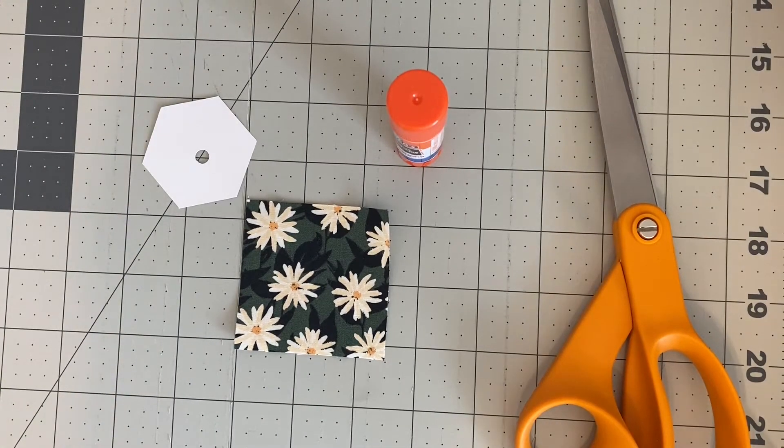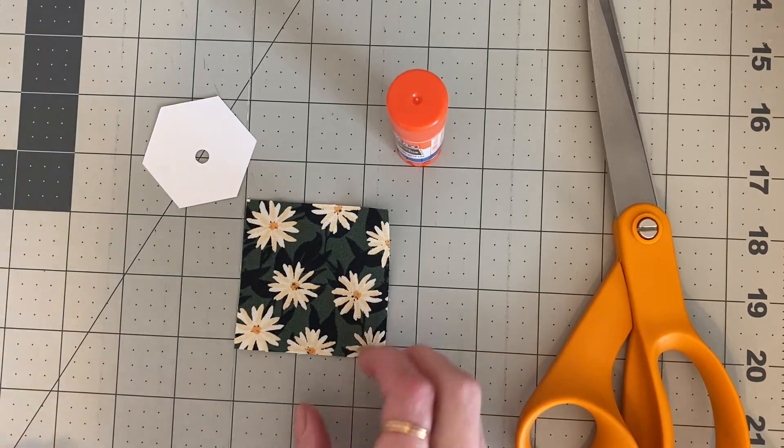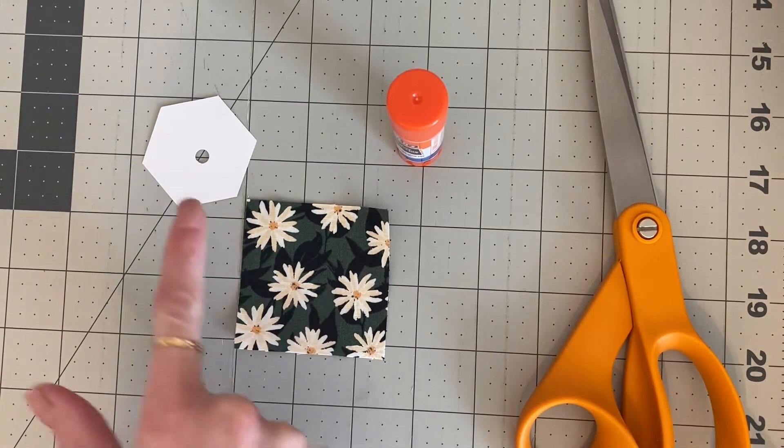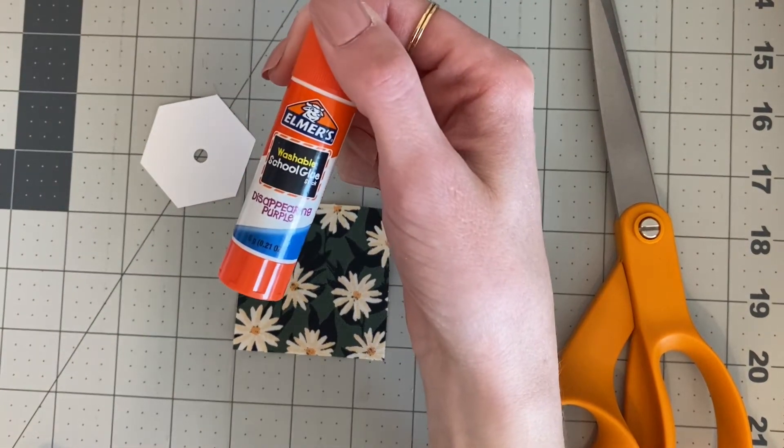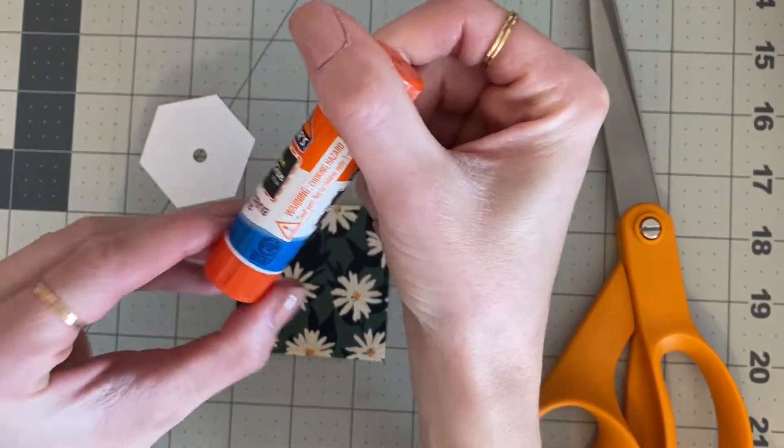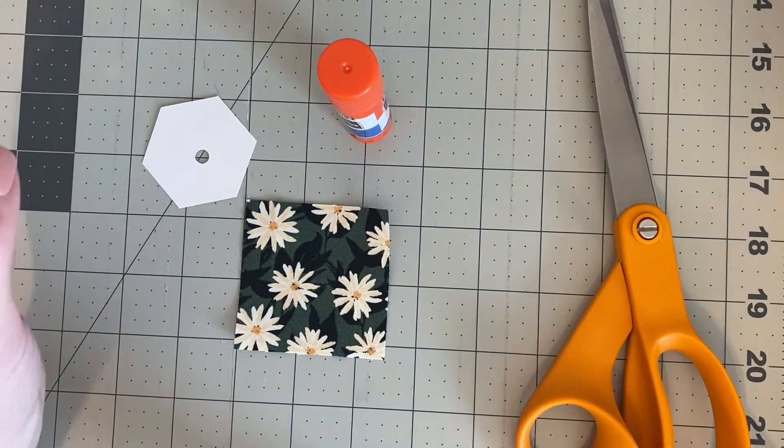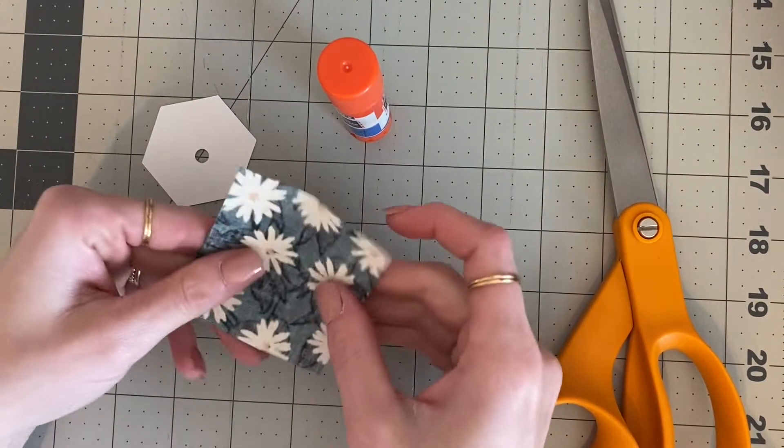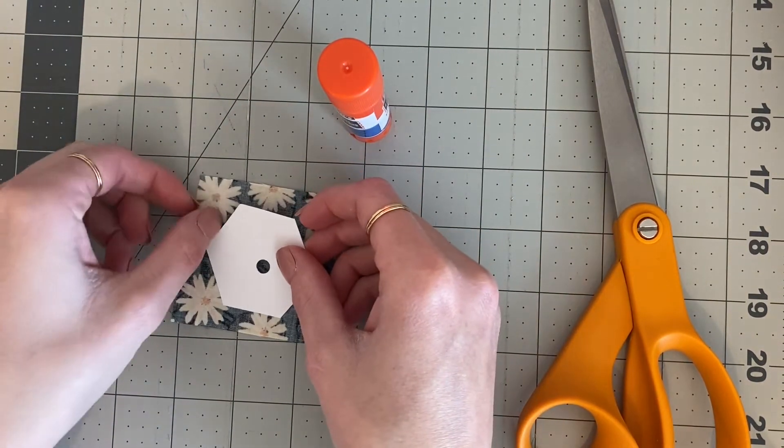Hey guys, in today's video I'm going to be showing you how to glue baste a hexi flower. So what you'll need is your fabric, your hexi template, some glue - I'm just using this Elmer's glue but you can use any glue you want - and some fabric scissors.